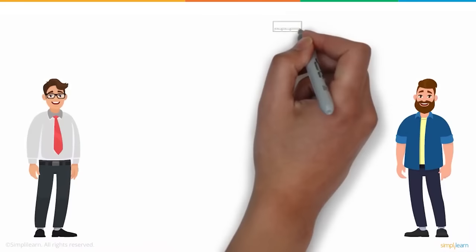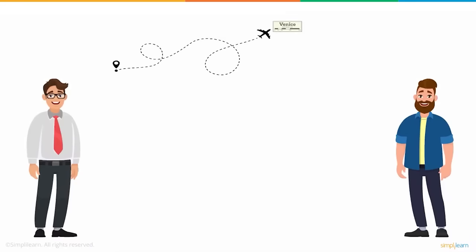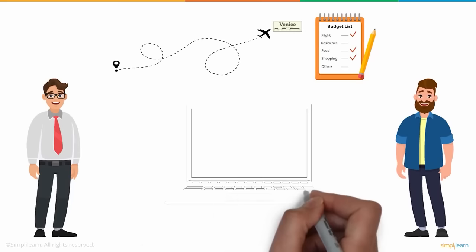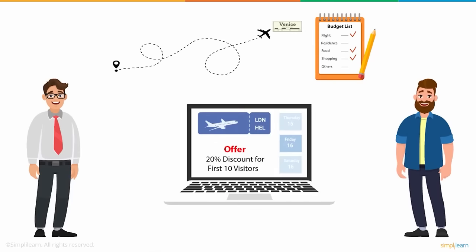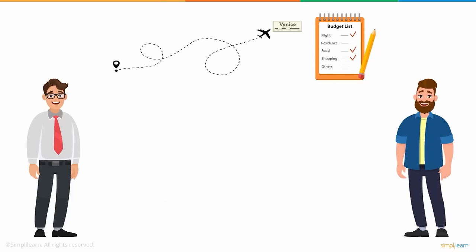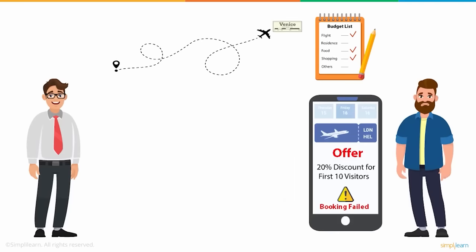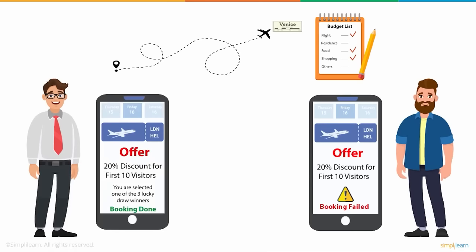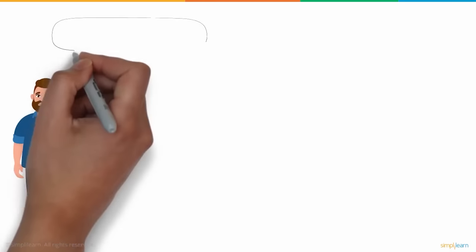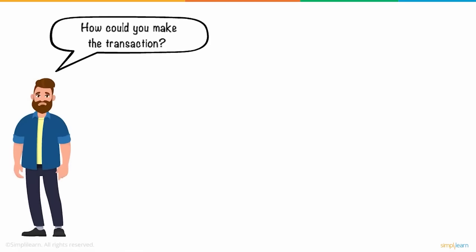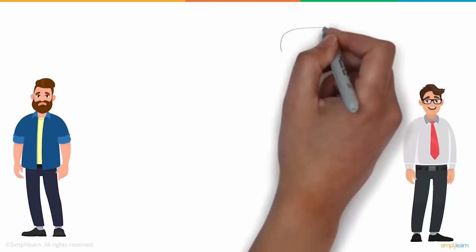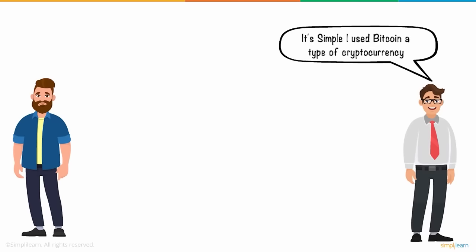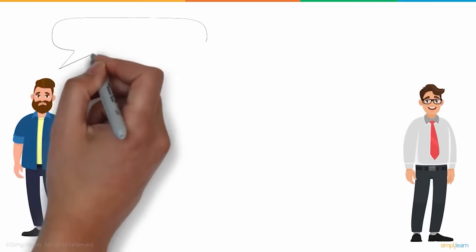Meet Frank and Daniel. One day they decide to go on a trip to Venice and make a budget list for all their expenses. They look to book online from a site offering discounts to the first 10 visitors that day. While making their flight bookings, Daniel's transaction failed and he missed the offer. On the other hand, Frank paid very quickly and easily, even becoming one of three lucky draw winners. Daniel was surprised and asked Frank how he managed the transaction.